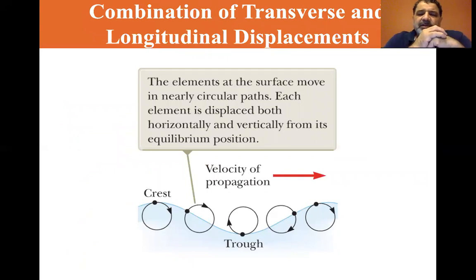Combination of transverse and longitudinal displacements. This would be like waves on water. The elements at the surface move in nearly circular paths. Each element is displaced both horizontally and vertically from its equilibrium position. I can remember seeing this on the Bob Hall Pier way back when the Bob Hall Pier was much longer before parts of it got wiped out by a hurricane. And just sitting, there was probably some kind of cup or something in the water, some trash that shouldn't have been there, but I was watching it anyway.